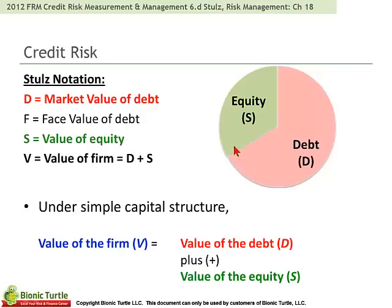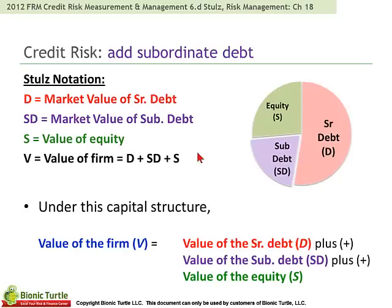That is to say, if the shareholders pay off all of the debt — i.e., exercise their strike price — they will own the firm's assets. The additional tweak here is to add a third class: subordinated debt. So now we have senior debt, which has the senior claim on the firm's assets, then subordinated debt (or junior debt), and finally equity, which is last in line — the residual claim. If there's nothing left over for equity, it gets wiped out; on the other hand, equity has all of the upside leverage.